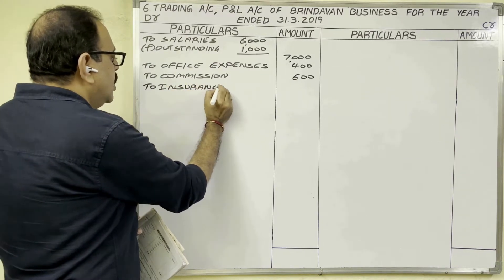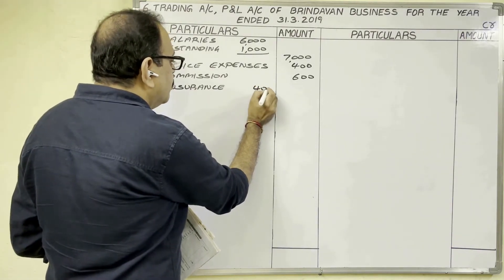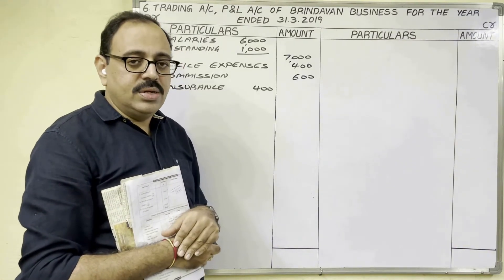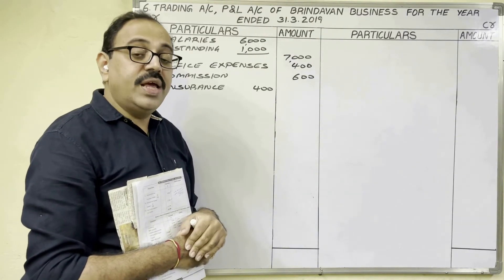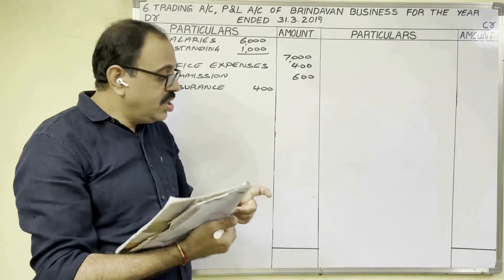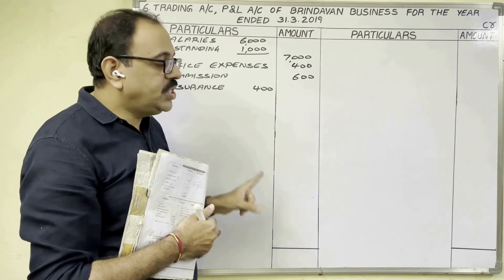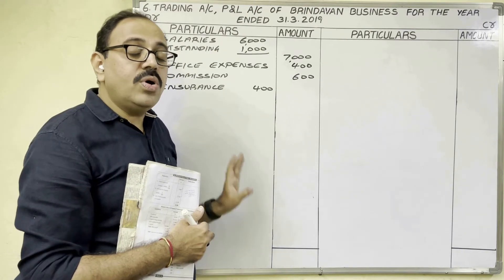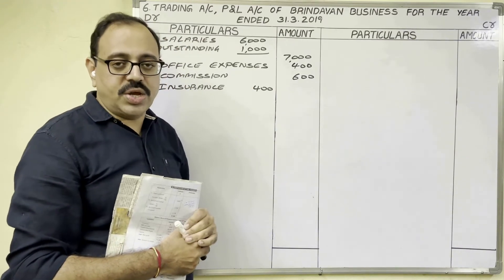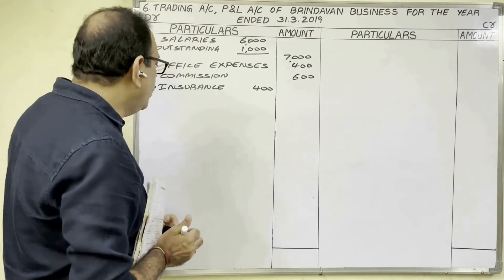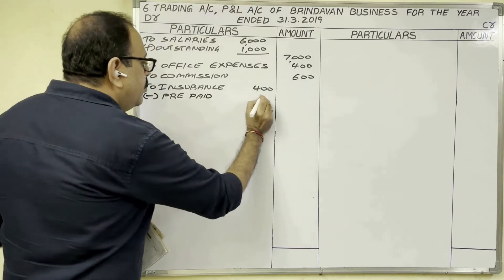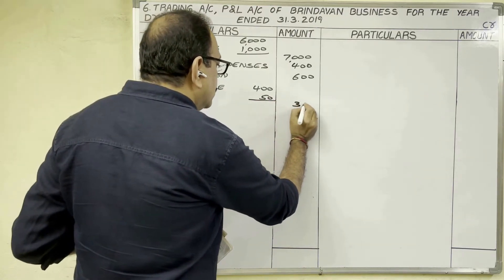Insurance has an adjustment, so write the amount in the inner column. Adjustment number three: prepaid insurance is 50 rupees. Prepaid means paid in advance — current year is 2018-19 but 50 rupees relates to next year 2019-20. Since we are preparing accounts to know current year profit or loss, we should only include current year expenses. Therefore we subtract prepaid insurance of 50 rupees, leaving 350 rupees in the outer column.